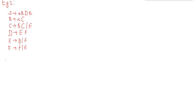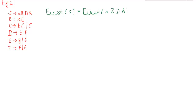We will start with the calculation of first(S). First(S) can be calculated as first(S) = first(a, B, D, h). According to rule number one for the calculation of first set, it will give us {a}.